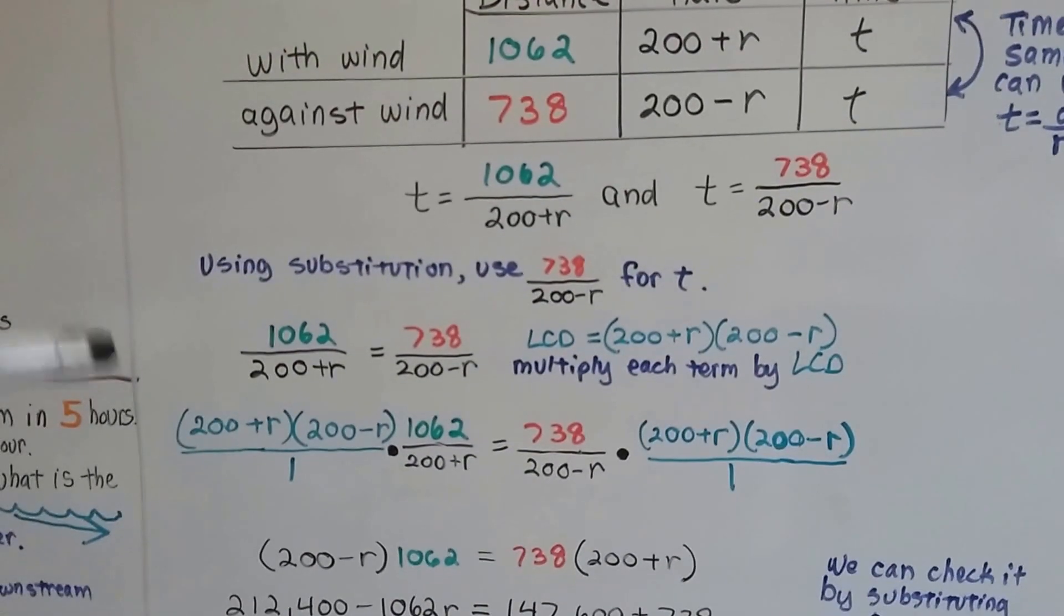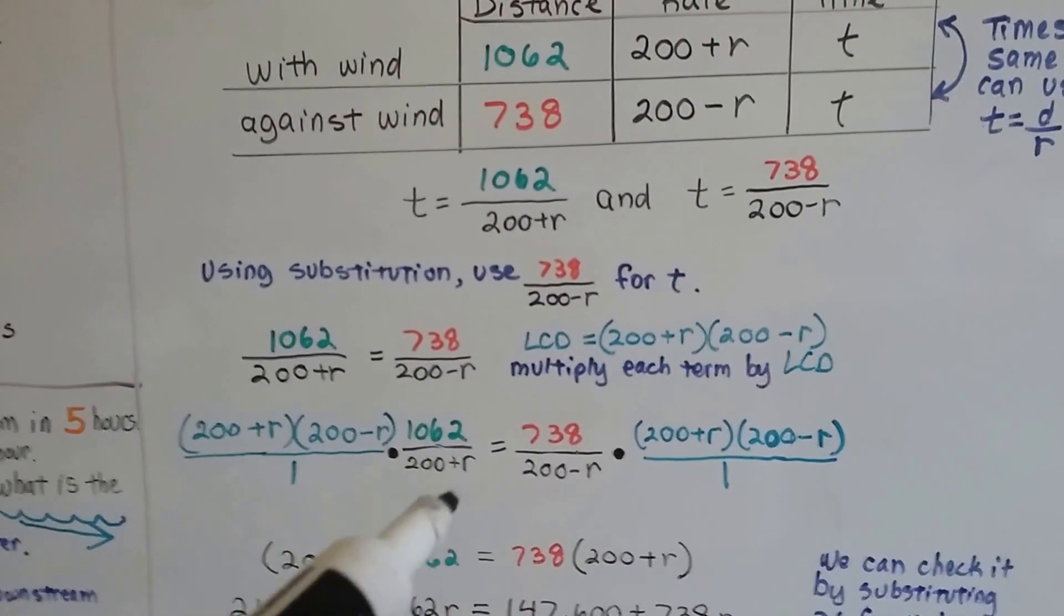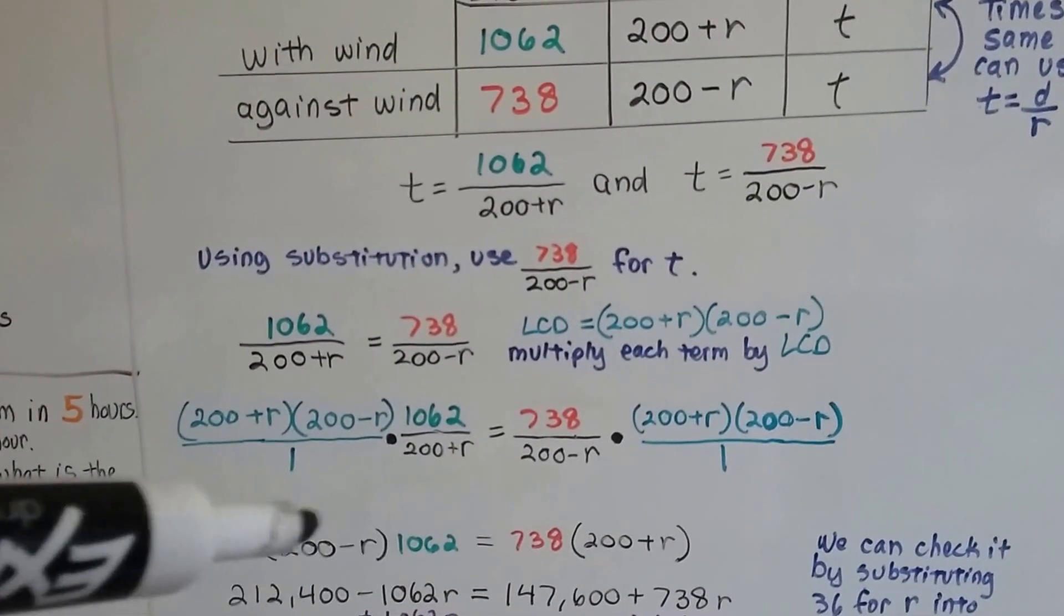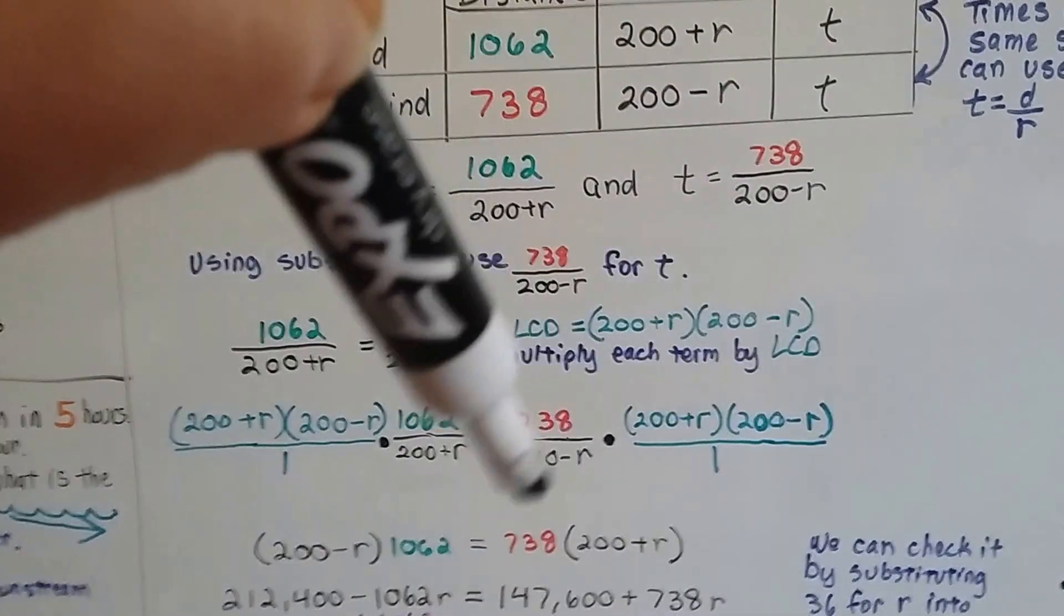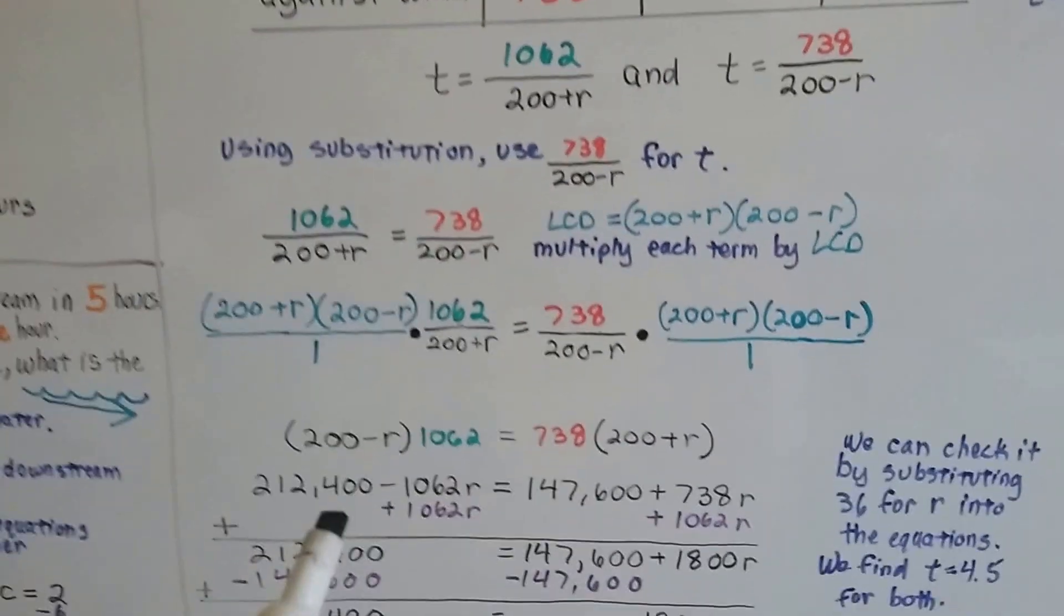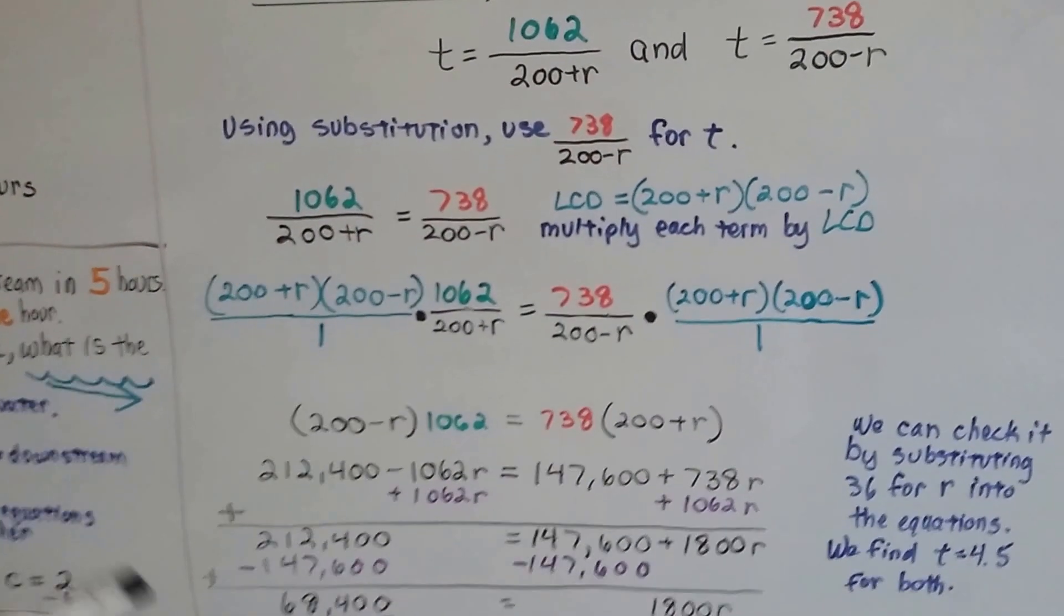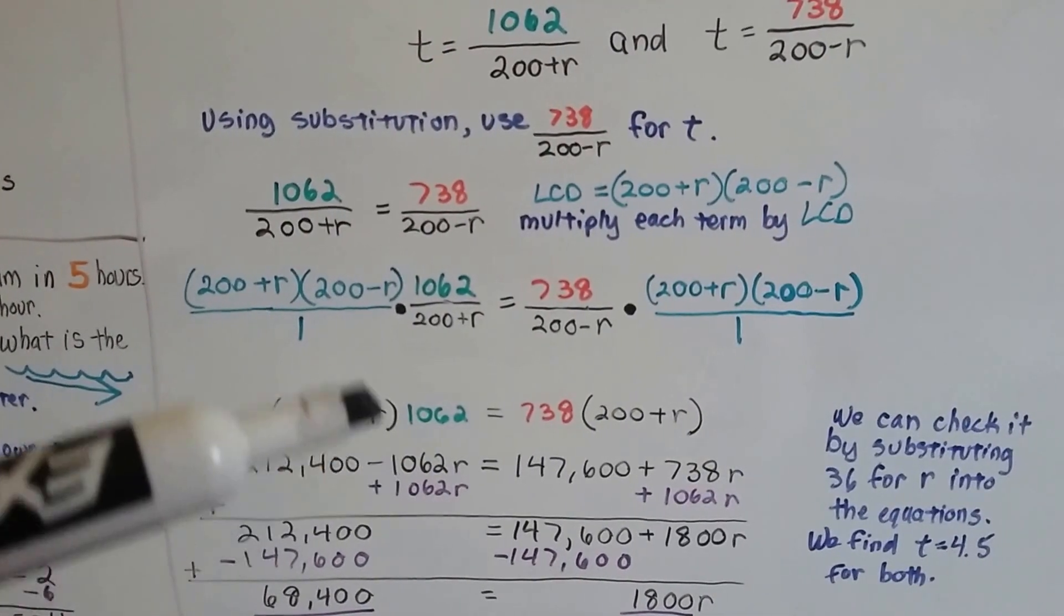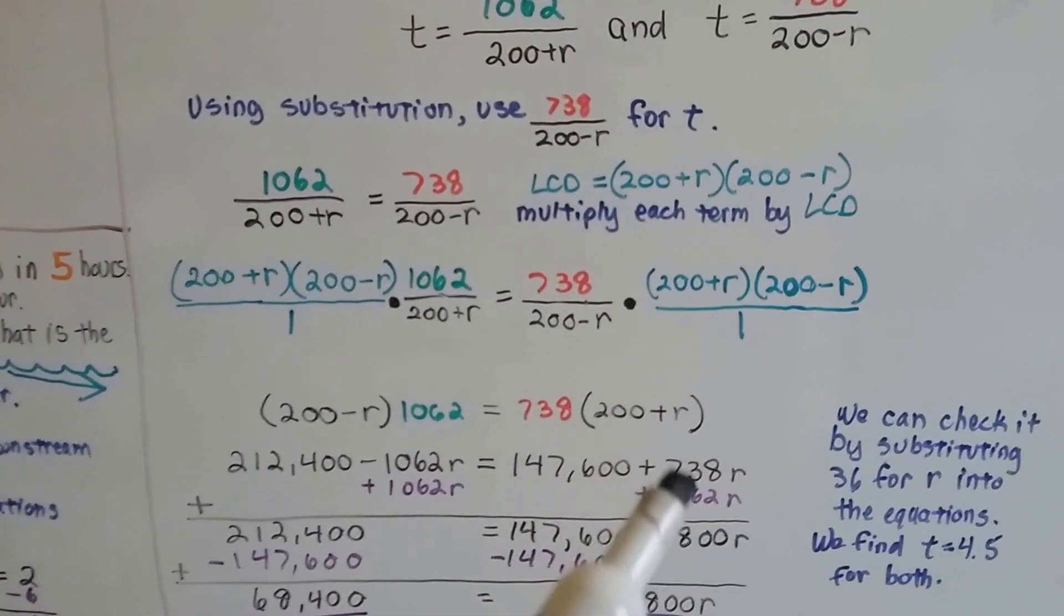So we're going to multiply the 1,062 by this, and the 738 by this, and these by the ones. Now if you look, you'll see 200 plus r and 200 plus r, this one cancels out with this one as a 1. So we're just left with 200 minus r times 1,062 on this side. This 200 minus r and this 200 minus r cancel out as a 1, so we're left with 738 times 200 plus r on that side. We use distributive property on both sides, and we get 212,400 minus 1,062 r for this side, and 147,600 plus 738 r on this side.